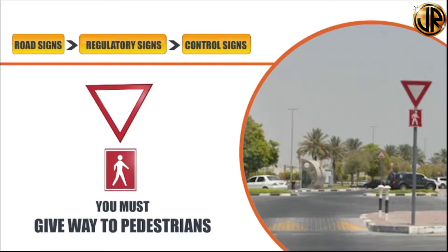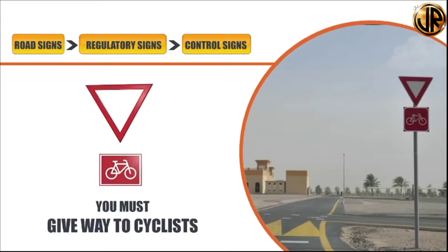You may find the give way to pedestrians sign commonly in slip lanes, residential areas, sub-urban areas, places of worship, parks and shopping malls. When you see this sign, slow down, look for pedestrians and if they are present near the road or junction, be prepared to stop in order to allow them to cross the road safely. The give way to cyclists sign can be found on junctions or roads where there is a cycle riding track crossing. When you see this sign, slow down, look for cyclists and if they are nearby, always give way to them.